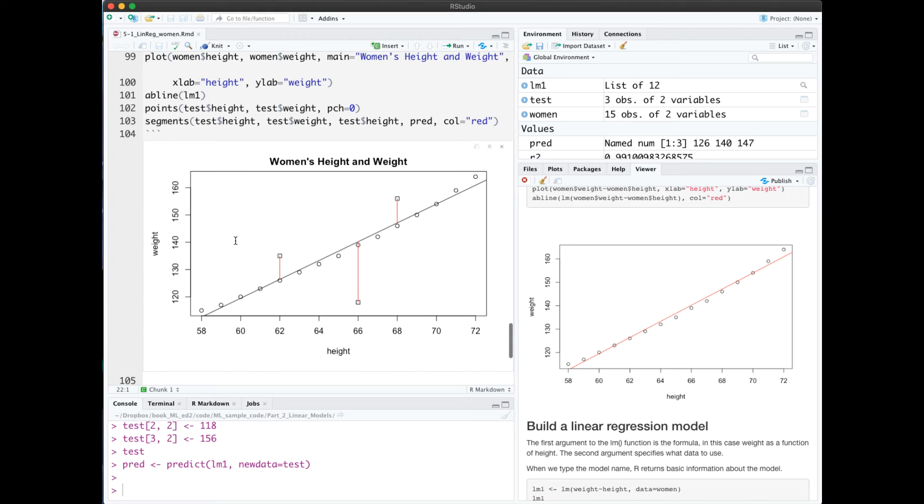Here, I'm plotting the residuals manually just to show what they are, and then we can see why our test data did so poorly, because our points were very far off from our regression line.